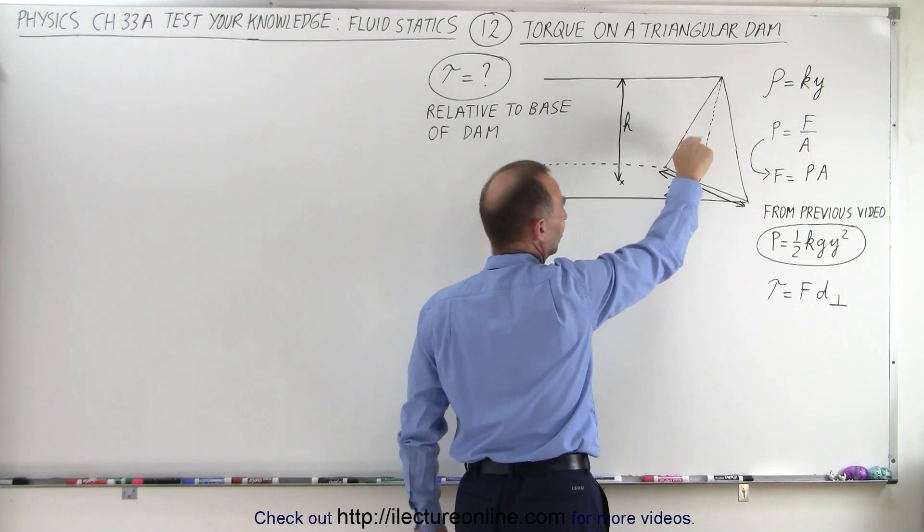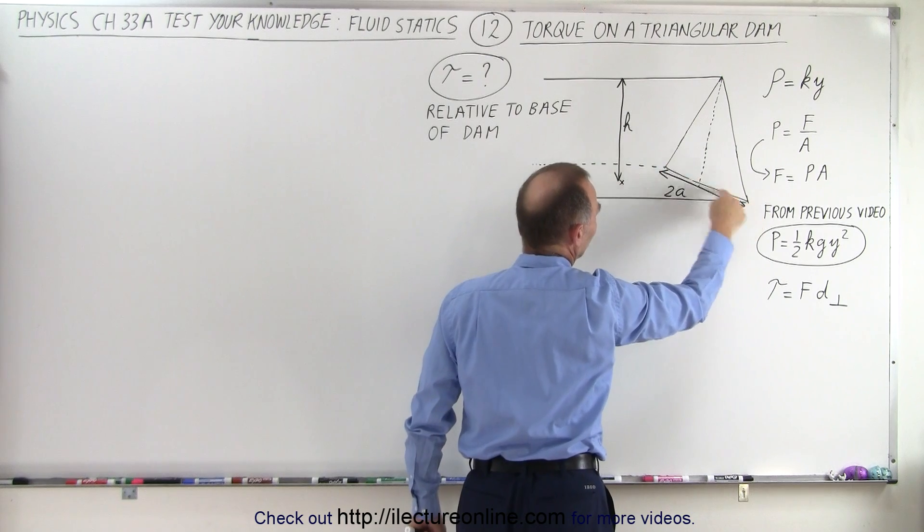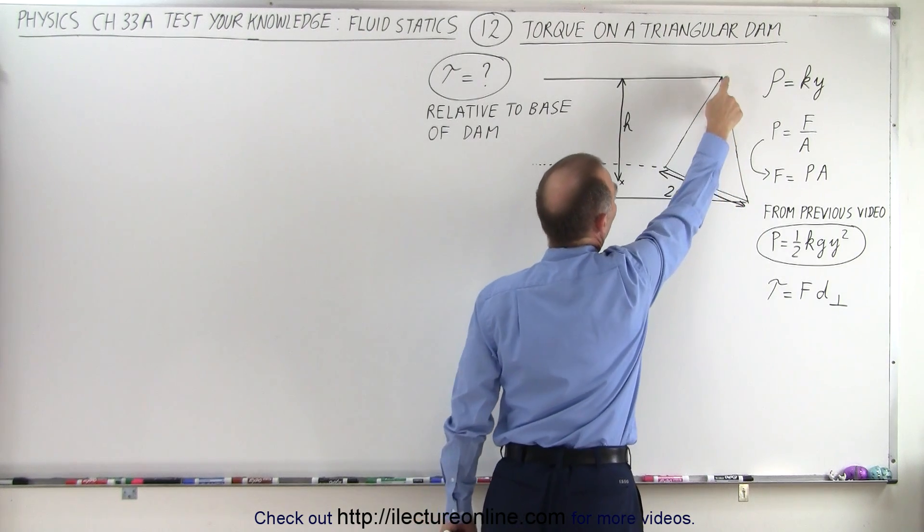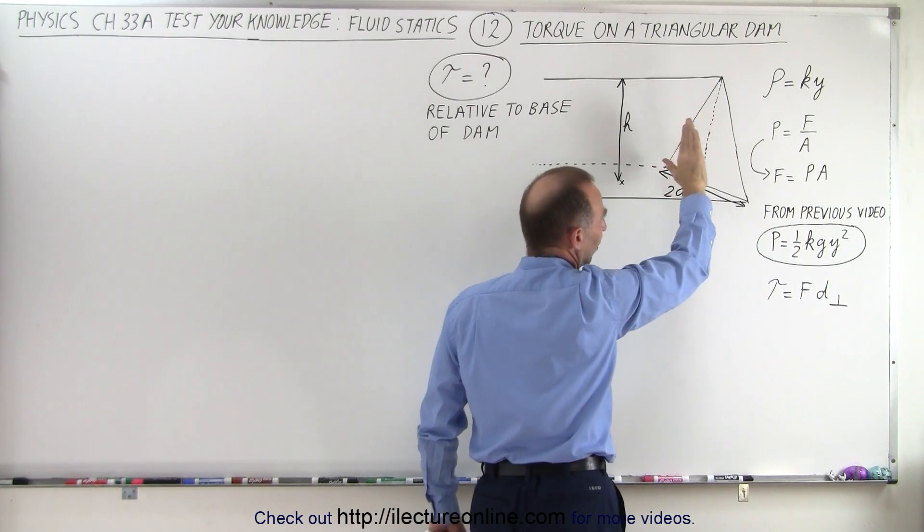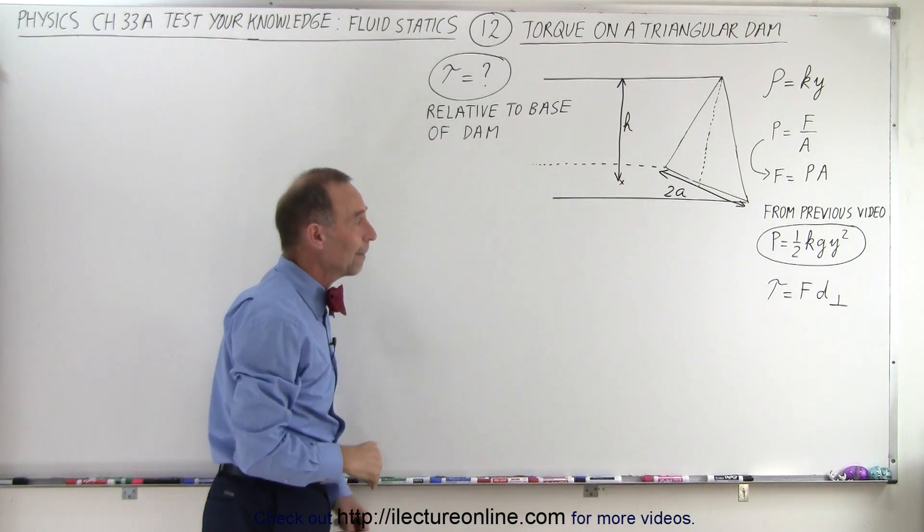And we do have a torque against this dam. It's a triangular dam. The base has a width of 2a. The top comes down to a point, so the liquid is pushing on the dam, trying to push the dam over, and we're trying to find the torque on that dam.